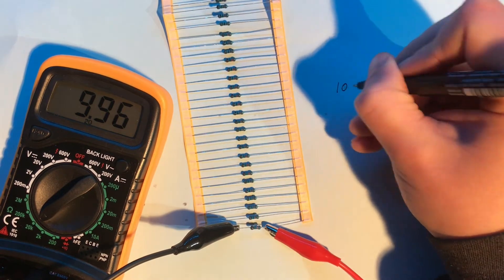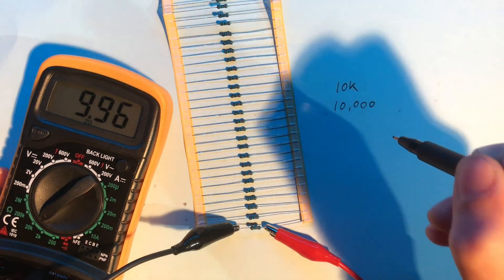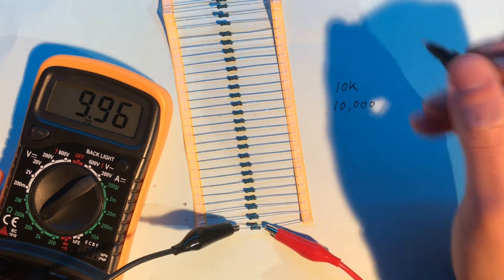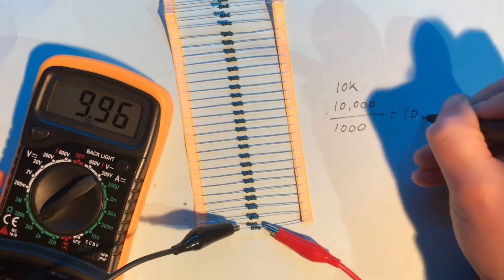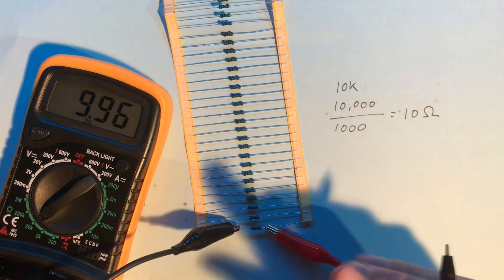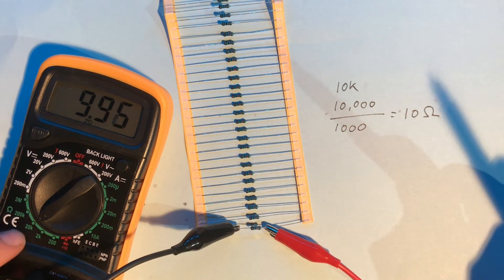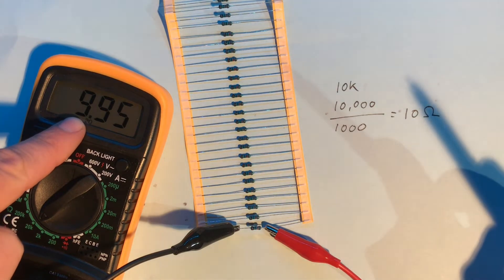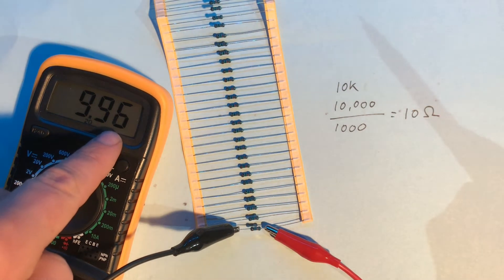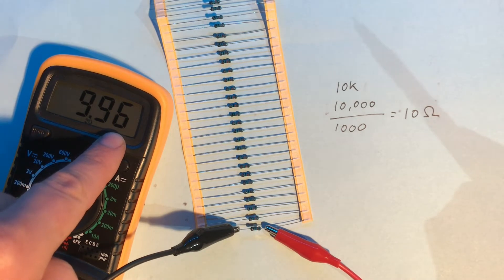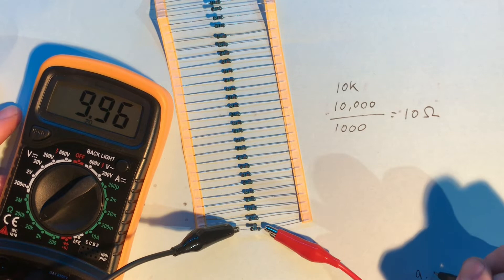We're going to start with the 10k resistors. What we're looking for really is a 0.1 percent tolerance. These are 10 kilo ohms, that's 10,000 ohms. If we want to find 0.1 percent of 10,000 ohms what we do is divide it by a thousand and that comes out as 10 ohms. So we want to find resistors with a margin of 10 ohms difference to each other. Because we're measuring in kilo ohms here the 9 is a thousand, the next digit across is the hundreds and this is the tens. So we're looking for resistors with plus or minus one difference on this digit here.